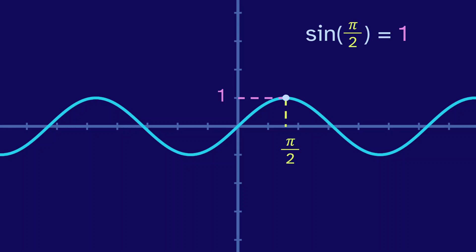Sine of pi over 2 is 1, and sine of pi is 0. But what is sine of 1? It's not a simple question.